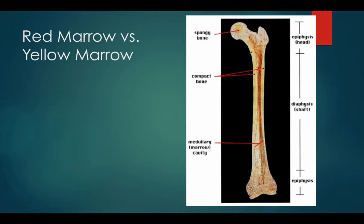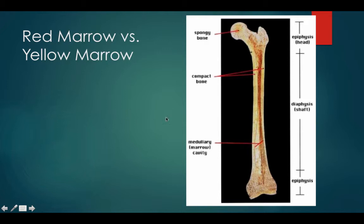Red marrow versus yellow marrow: red marrow makes red blood cells. Kids have more red marrow than adults do. As we age, our red marrow in our long bones turns to yellow marrow — the medullary cavity, which once held red marrow, turns into yellow marrow. Yellow marrow stores energy and fat. As adults, our red marrow is mainly found in certain areas of the axial skeleton, and is made within the spongy bone.